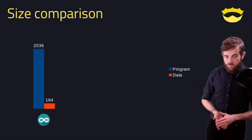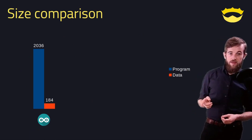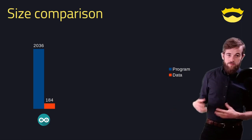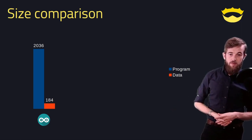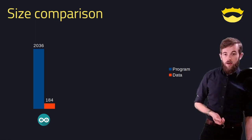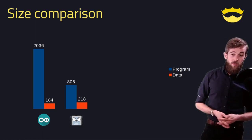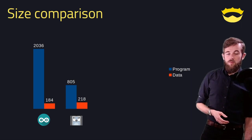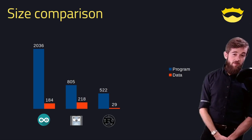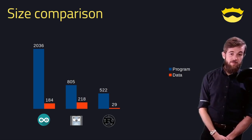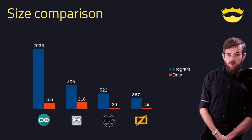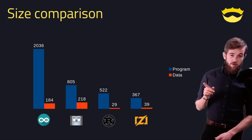Let's do a size comparison. I built that example in all five languages. The Arduino implementation uses about 2 kilobytes of program memory and 184 bytes of data memory. TinyGo comes in at 805 bytes of program memory and 218 bytes of data memory. Rust for embedded is 522 bytes of program memory with 29 bytes of data memory, which is pretty good. Zig comes in at 367 bytes of program memory with 39 bytes of data memory.